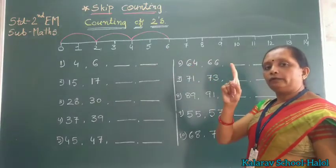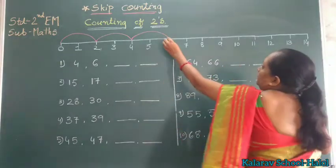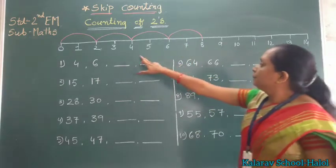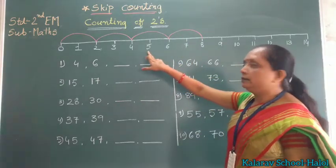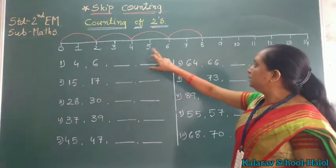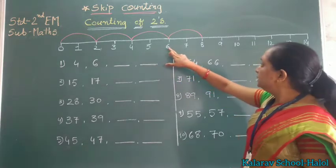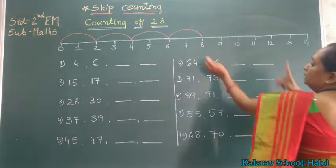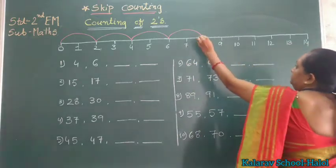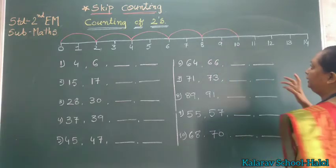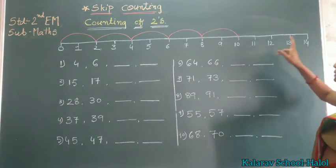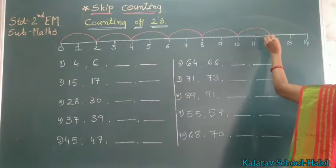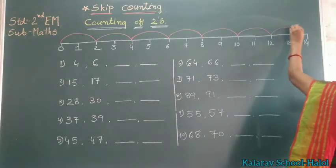Then, 6, skip 1. Then 6, skip 1, skip 2, 8. Then skip 2, 9, 10. Then 11, 12, and 13, 14.